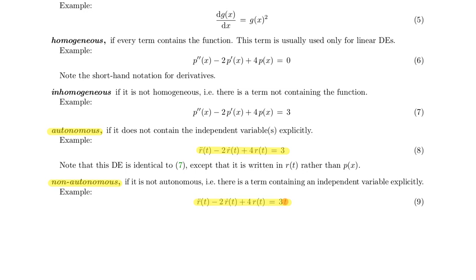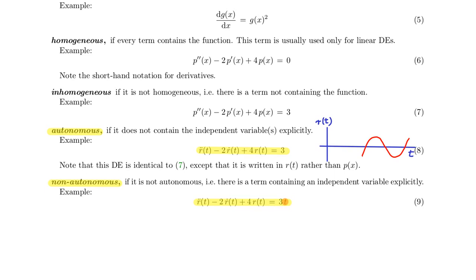An important implication of a differential equation being autonomous is that its solution is shift invariant. So if you have a solution you can shift it in the direction of the independent variable, because the autonomous differential equation does not contain t explicitly — it only refers to t as a relative time marker and not as an absolute one. The non-autonomous differential equation contains t explicitly, so it makes a difference whether you start at 0 or at 100.